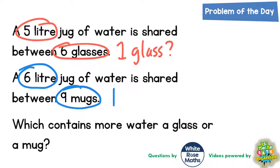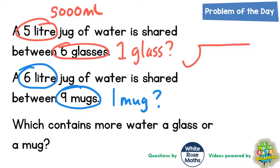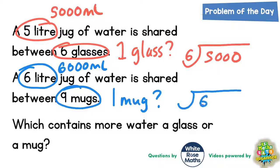Let's do the glasses first. Five litres is the same as five thousand millilitres — remember, one litre is one thousand, two litres is two thousand, three litres three thousand, four litres four thousand, five litres five thousand millilitres. We need to share that by six, so we do a bus shelter: five thousand shared by six. For the mugs, six litres is six thousand millilitres, shared by nine — so that's another bus shelter: six thousand shared by nine. We need to work out both and see which has the biggest answer.